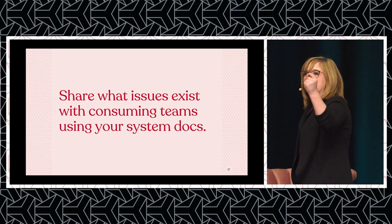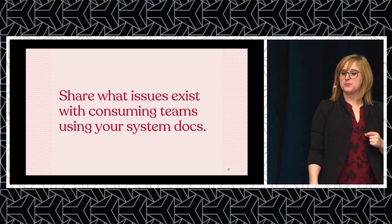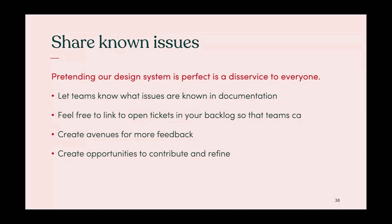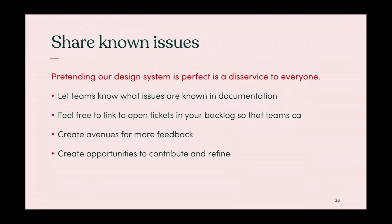We want to give leadership and teams a look into things so they continue to prioritize accessibility — because accessibility is profitable, it's usability. Share what issues exist with consuming teams using your system docs. Pretending our design system is perfect is a disservice to everyone. We need them to know: 'hey, we know this issue exists, we've got it prioritized.' It gives them an opportunity to help contribute and refine.